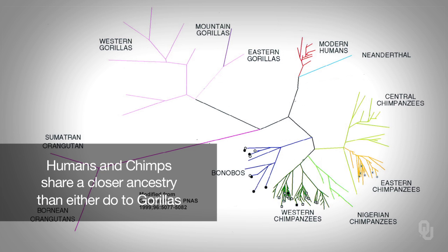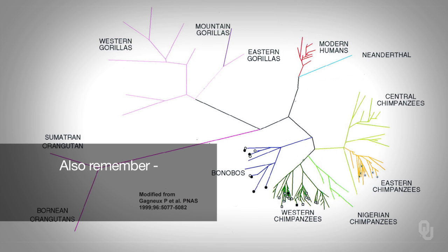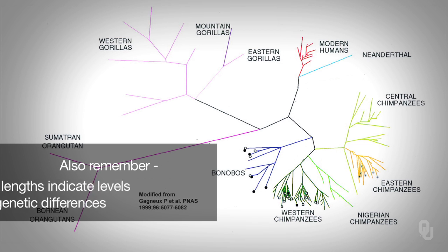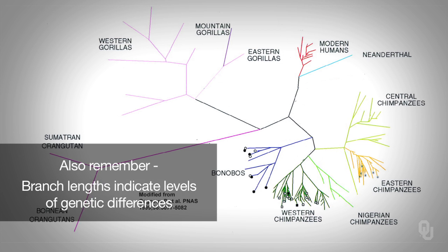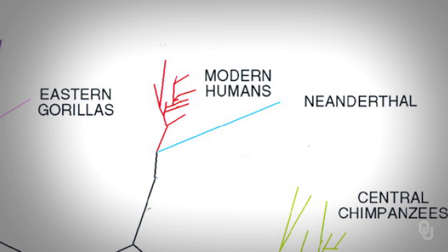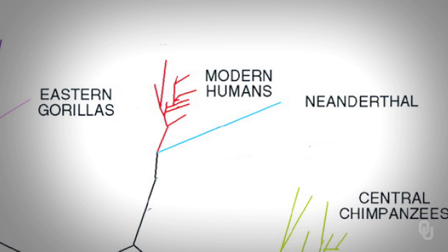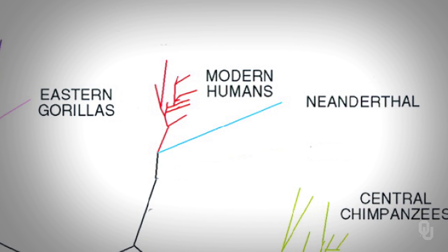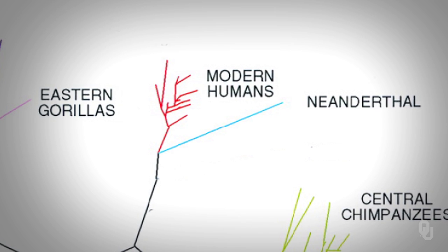We can also look at the branch lengths to infer the levels of genetic differences. Notice how humans, while representing people from all over the world, look remarkably similar to one another genetically when compared to the other primates — that is, the branch lengths are much shorter among humans.